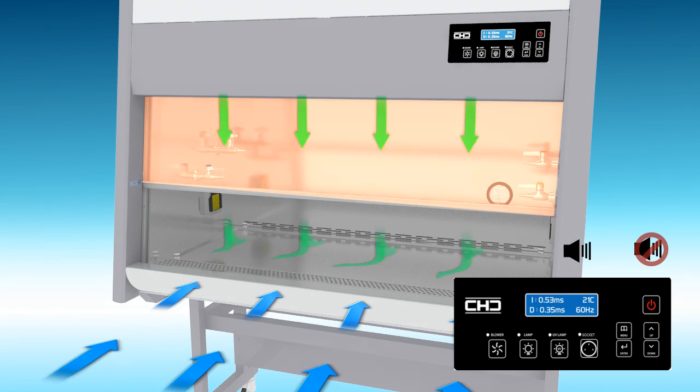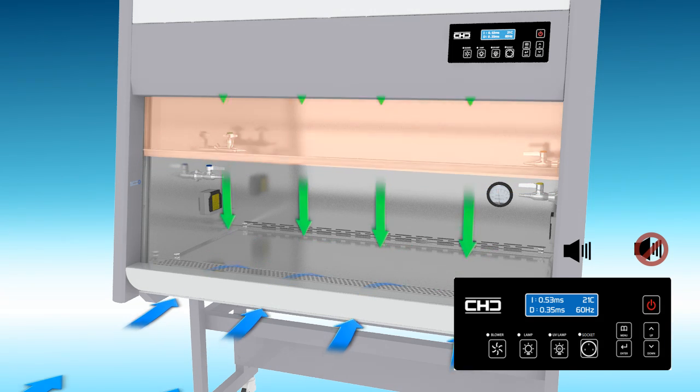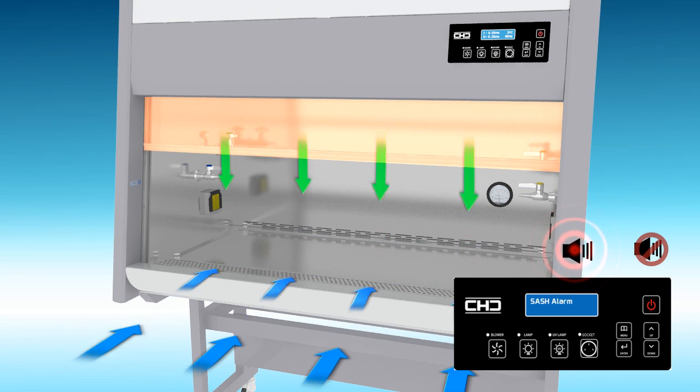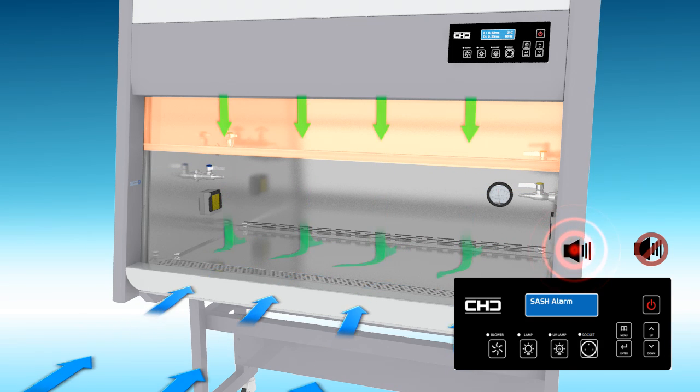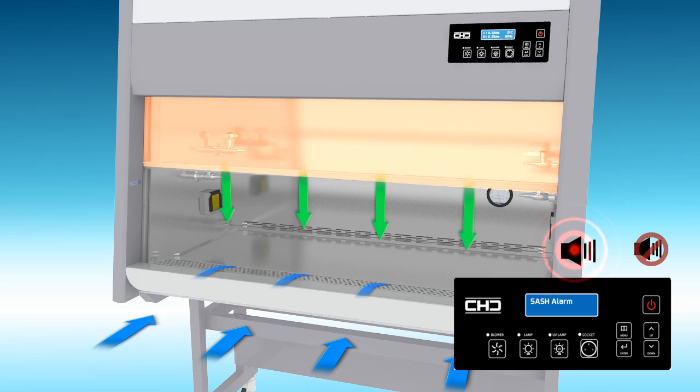Aside from this, sash alarm will be activated when sash level is out of the appropriate level. It may help the researcher to use the cabinet safely and easily.